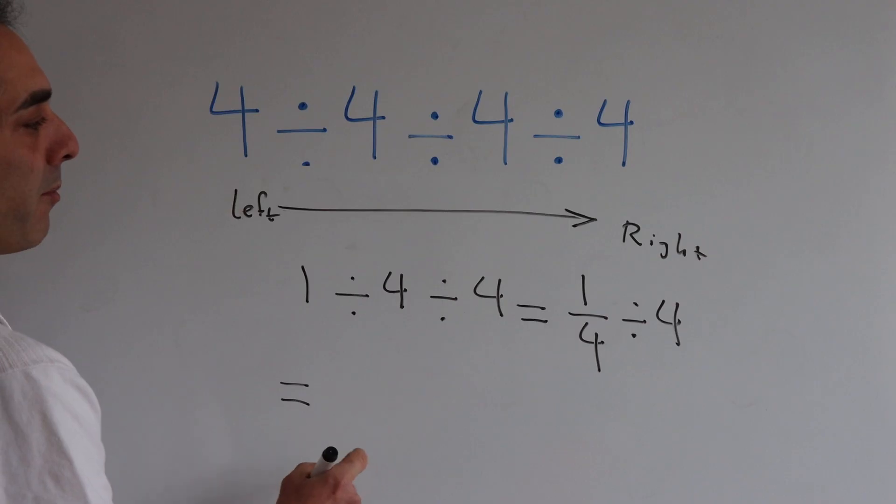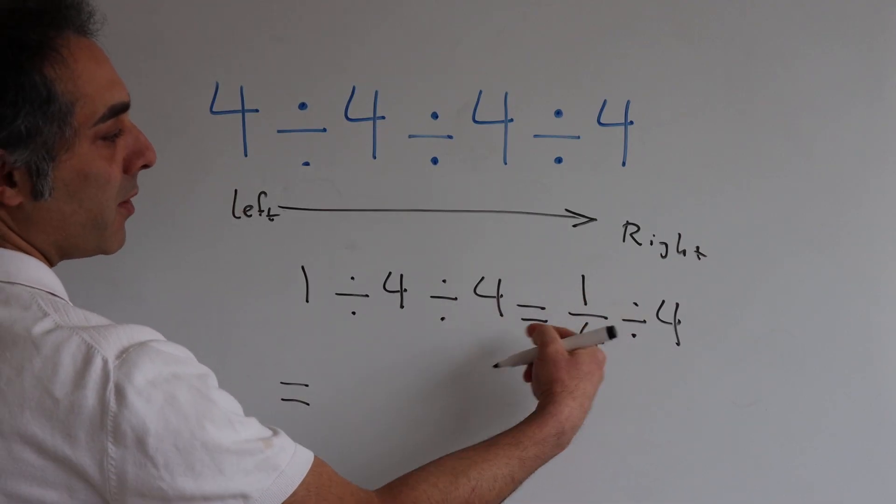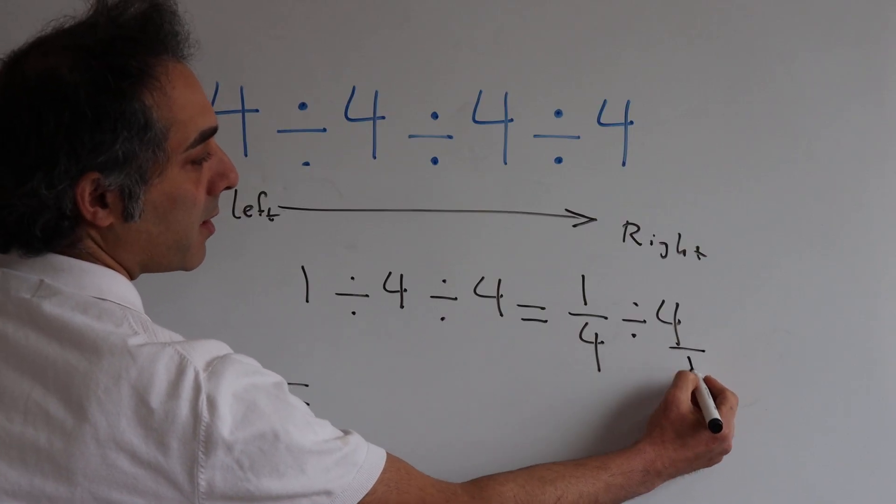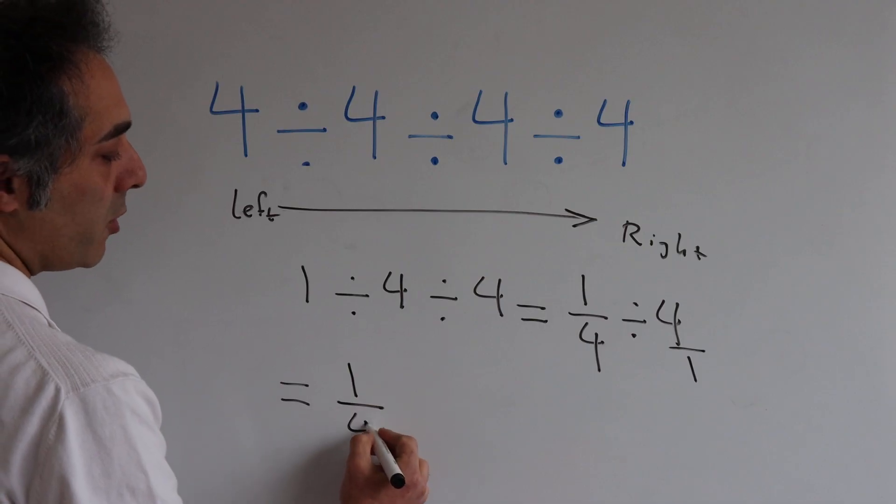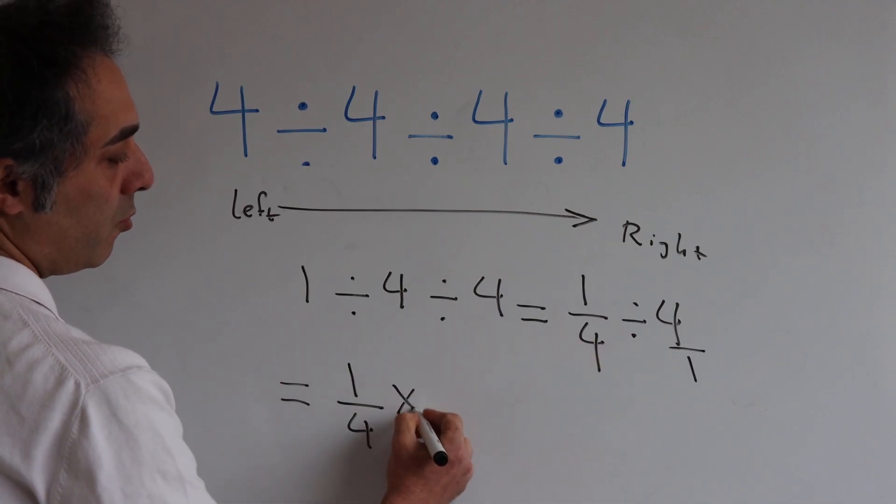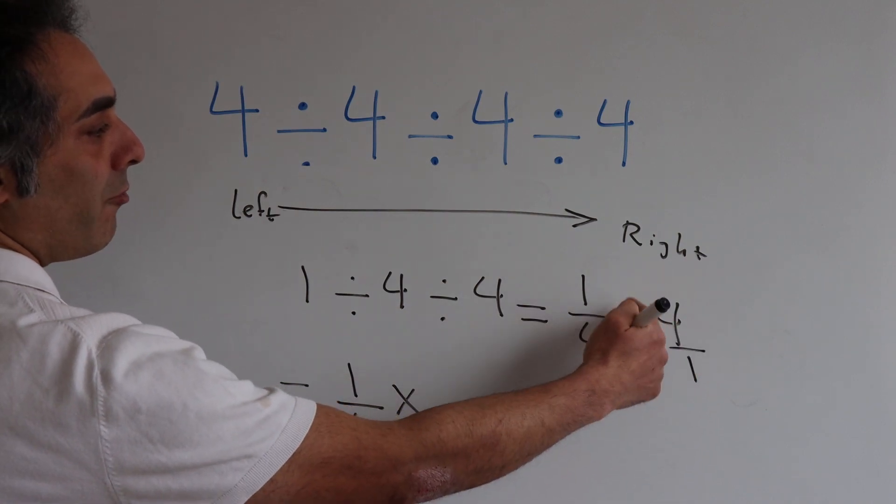when you have a division between two fractions, because this is like 4 over 1, you can always change the division to multiply by inversion of the following fraction.